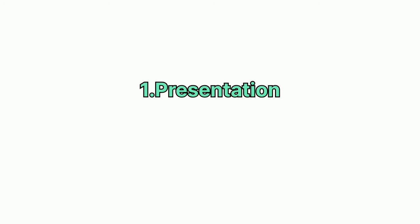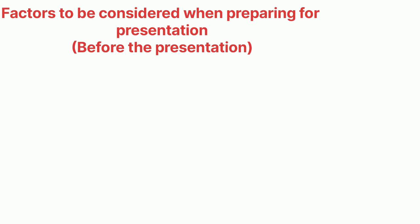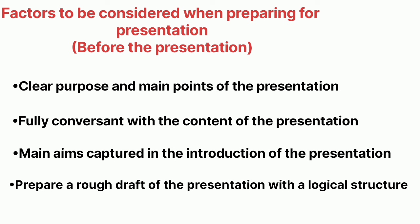Now we start with number one: Presentation. Section 1.1 covers factors to be considered when preparing for a presentation. Before the presentation, you need a clear purpose or intentions and main points. You must also be fully conversant with the content and objectives of the presentation — you cannot present while you don't know the content.